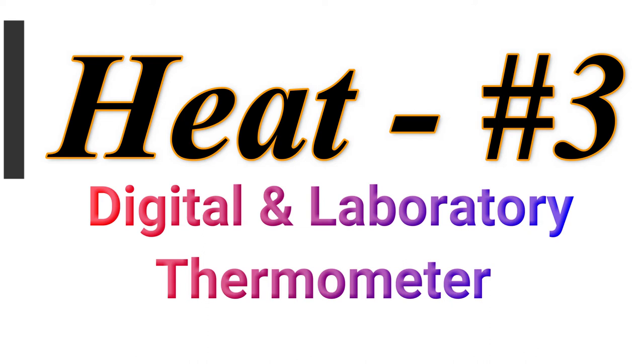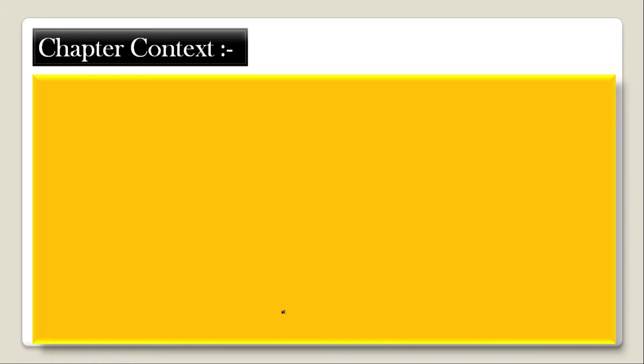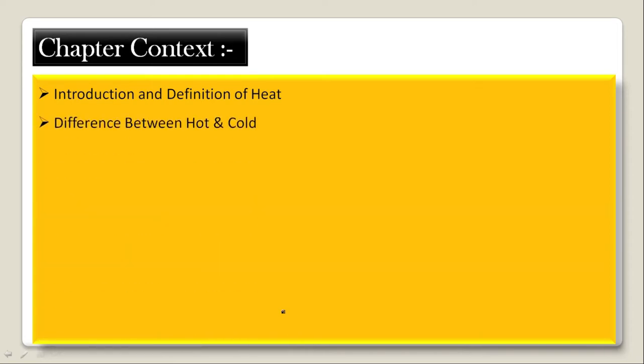Today we are going to discuss the 4th lecture of the chapter Heat of class 7. In all the previous lectures, we had seen about some topics — the first was introduction and definition of heat, in which we had seen what heat is and how it is defined. The second was the difference between hot and cold, with the use of which we can distinguish whether the object is hot or cold.